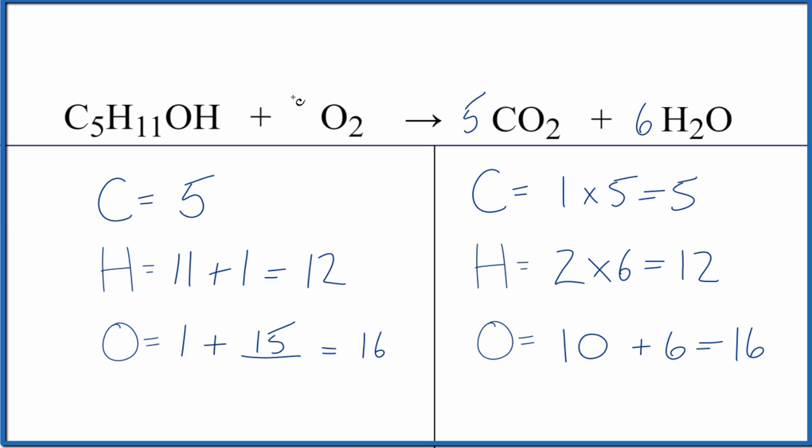What we can do, so we can make this as 15 over 2, because 15 over 2 times 2, these will cancel out, that'll give us the 15 there. So we're gonna leave the coefficient as 15 over 2, and now this equation is balanced. We have 1 plus 15 over 2 times 2, that's 15, that equals 16, and we're done. It's a little bit complicated.